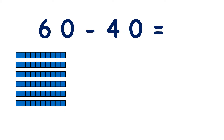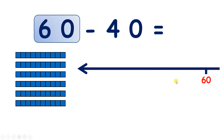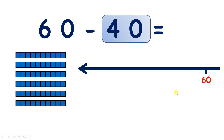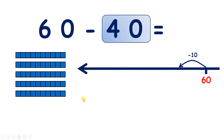We have 60 minus 40. Starting on 60, we can place 60 at the end of our number line, because that's the number we're subtracting from, and we're subtracting 40, which is four tens. So if we subtract one ten, we have 50.